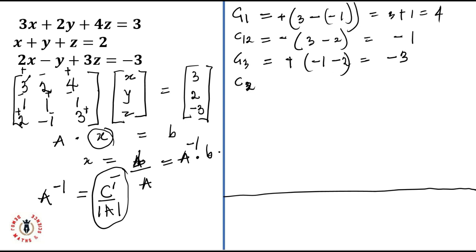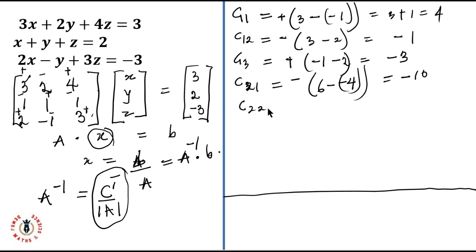For C21, we pick the second row and first column and exclude them: the determinant of three, two, minus one, four — so minus into three times two, that's six, minus minus four — giving minus ten. For C22, it's positive: three times three is nine, minus two times four is eight, so C22 equals positive one.